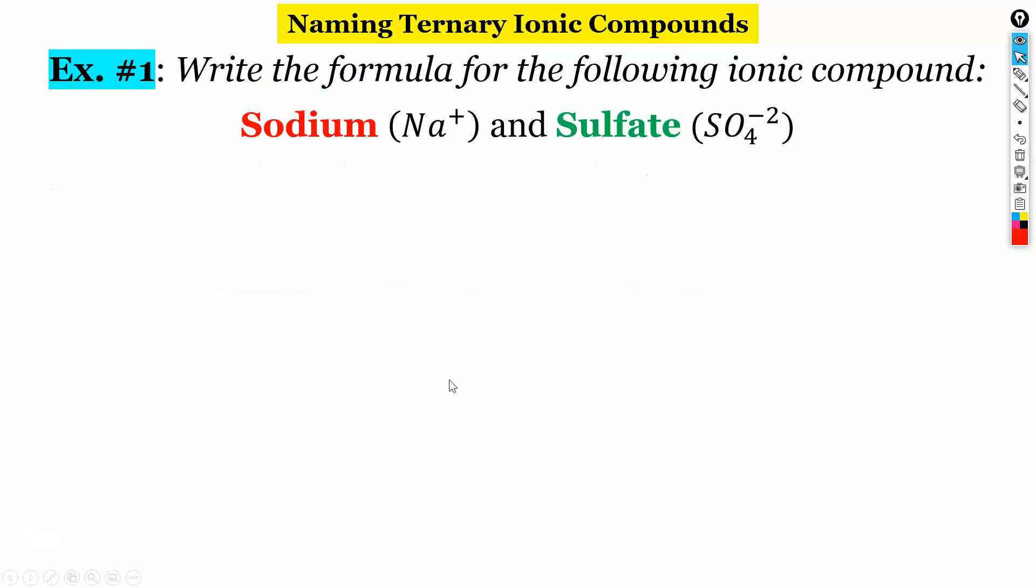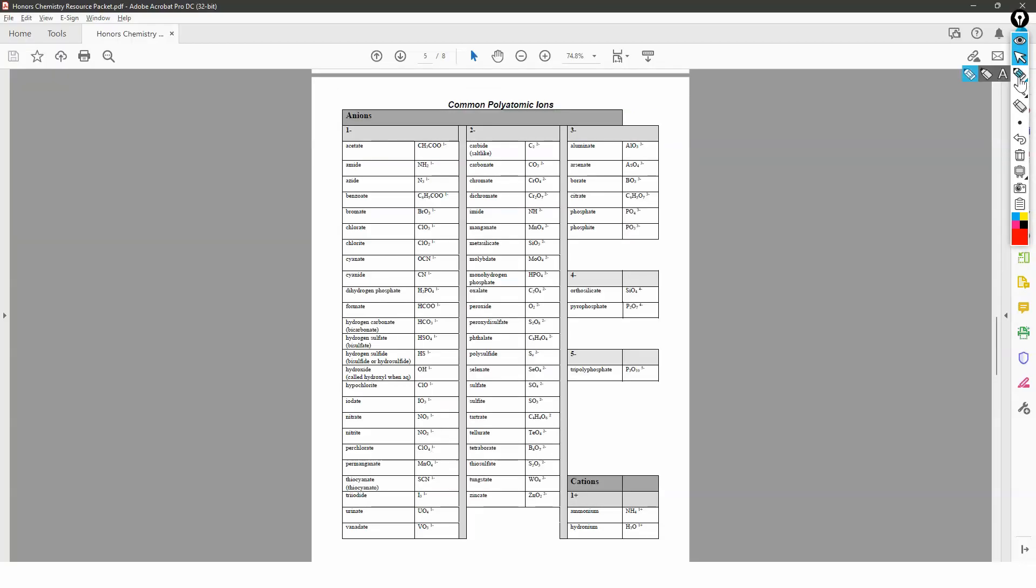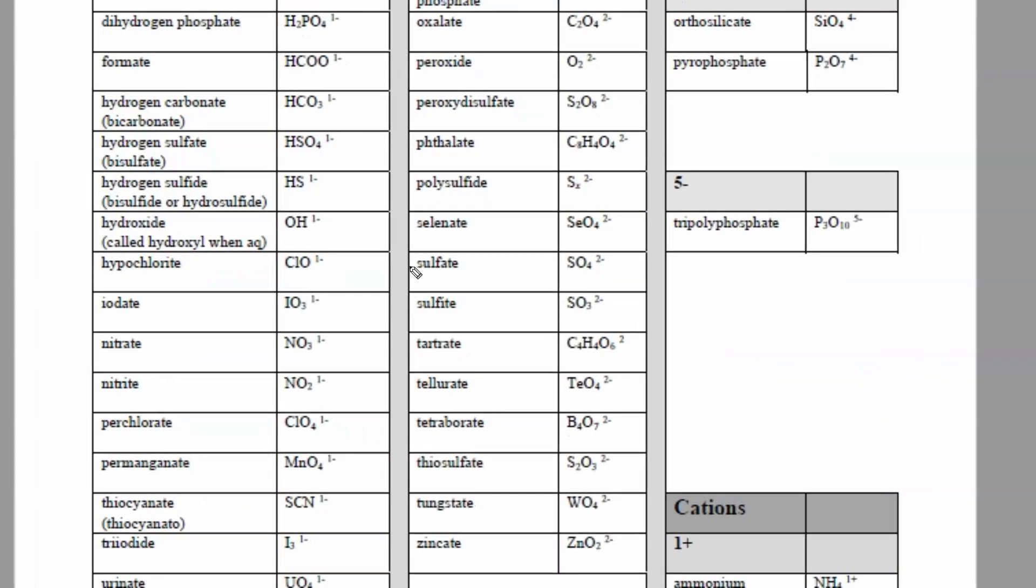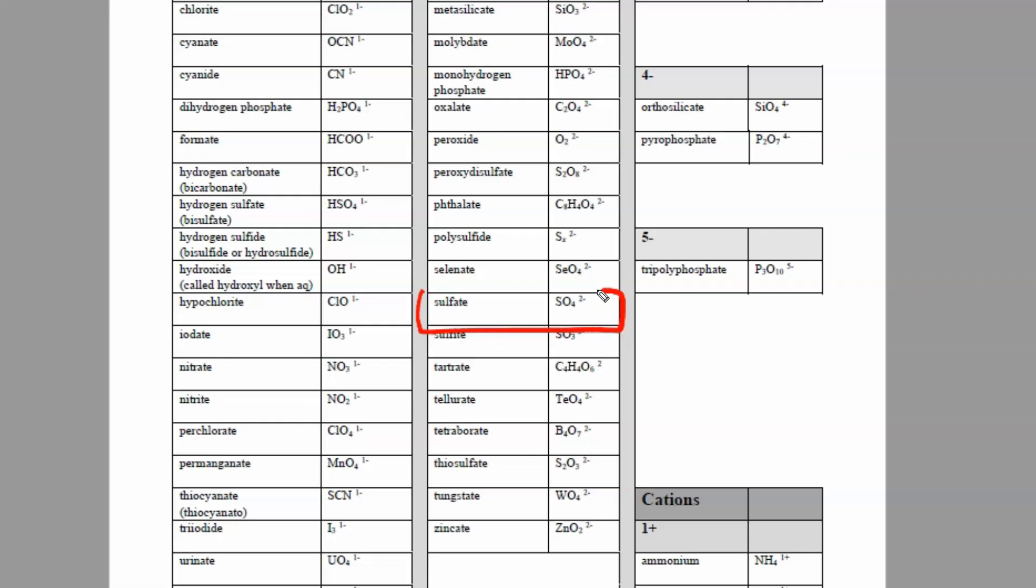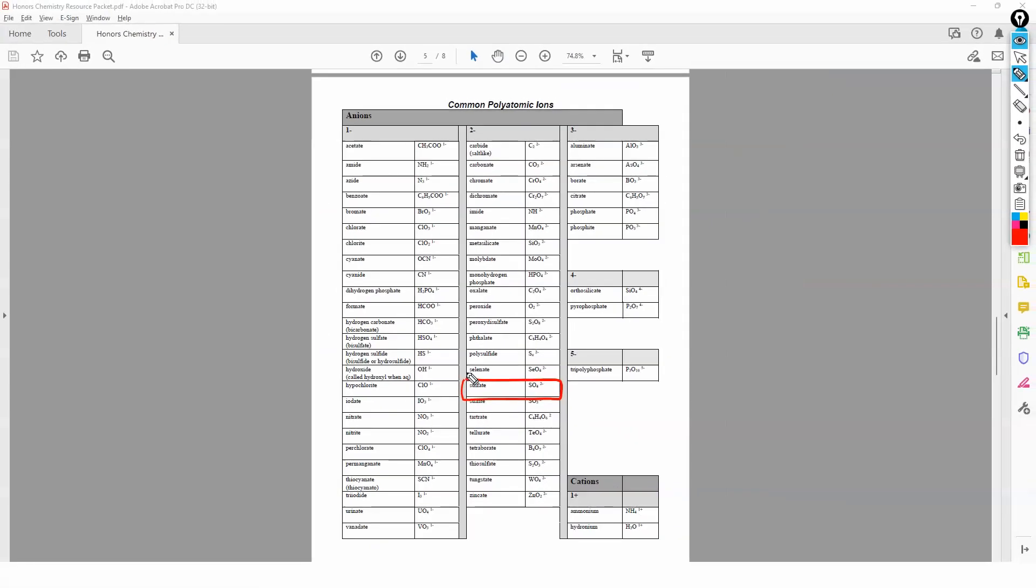So let's look at an example. So let's write the formula for the following ionic compound. We have sodium and sulfate. So just so you know where sulfate is coming from, let's go ahead and look at that table of polyatomic ions. Okay, so sulfate is right here.